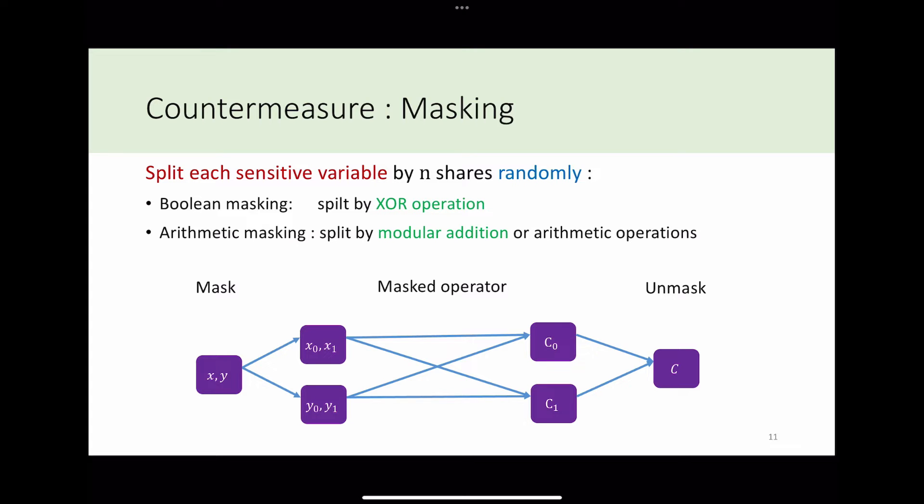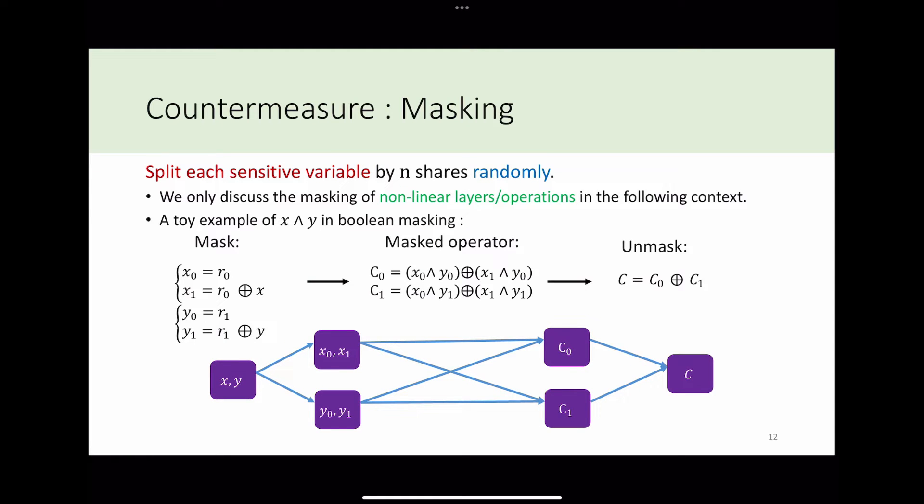Masking is a common countermeasure to resist correlation power attack. To eliminate the correlation between power consumption and the secret value, we split the secret value into several shares randomly. We use these random shares to encrypt or decrypt. Finally, we merge all the shares and get the correct output. Therefore, the power consumption is irrelevant to the secret value. There are two kinds of masking methods: Boolean masking and arithmetic masking. It depends on how to split the protected value. Since the masking operator of linear layers are trivial, we only discuss the masking of nonlinear layers in the following context.